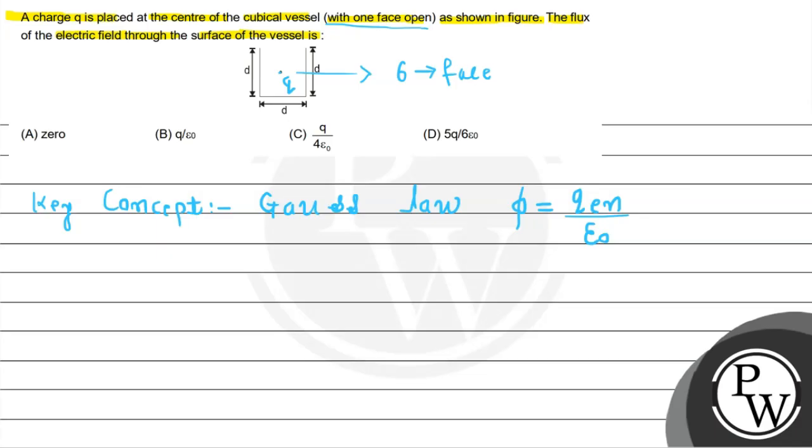So first, we have total six faces, right? So for my first face, the electric field, we will find it out by using the concept of Gauss law. So what will it be?